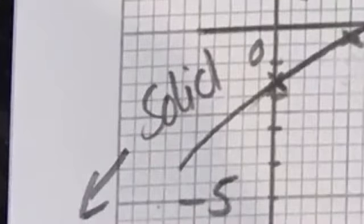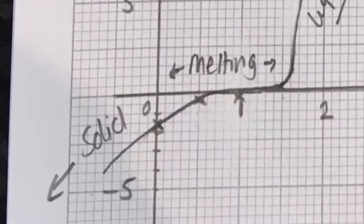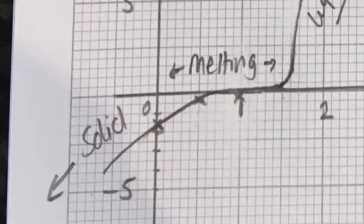Thermal energy is being supplied to the ice from the hot water in the water bath. The solid ice gets warmer, as the particles gain more kinetic energy. But eventually, the solid starts to change state into a liquid. We see this as the plateau on the graph.